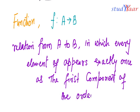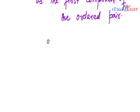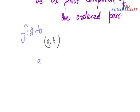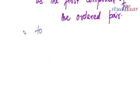We are talking about ordered pairs, which basically means we are talking about the elements of this relation. If I have (a, b), then this is an ordered pair and a is the first component. Since our function f is from A to B, then a belongs to capital A and b belongs to capital B.